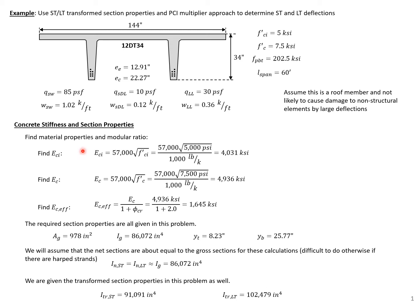The first thing we can do is calculate all of our material properties. We have the release modulus for our concrete, the modulus using the ultimate strength of our concrete, and the effective modulus, assuming a creep coefficient of 2, which we could calculate using any procedure for finding our creep coefficient. We also have our required section properties using our gross section. Our net short-term and net long-term moment of inertia are about equal to our gross moment of inertia, and we're also given our short-term and long-term transform moment of inertia.